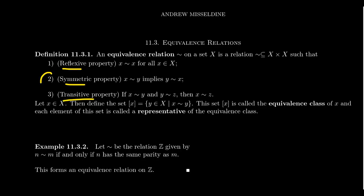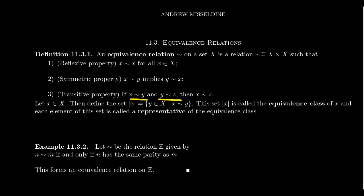The second axiom replaces anti-symmetry with symmetry. Symmetry says that if x is related to y, then y is related to x — the direction of the relation is always reversible. The transitive property says that if x is related to y, and y is related to z, then x is related to z. These three axioms give us an equivalence relation.